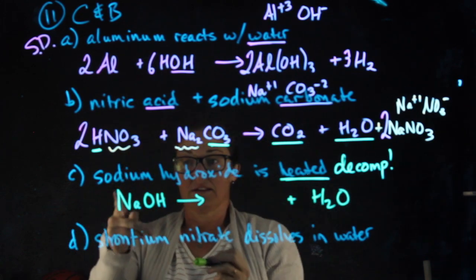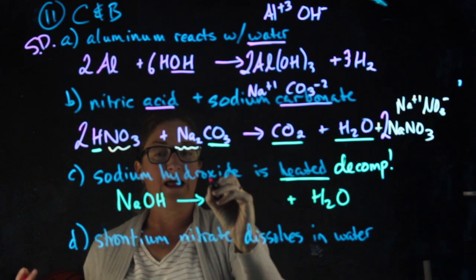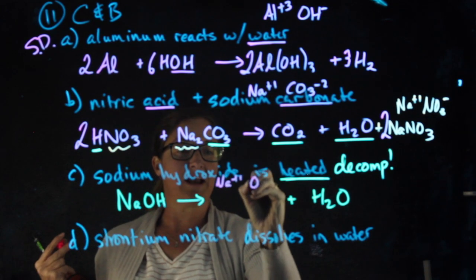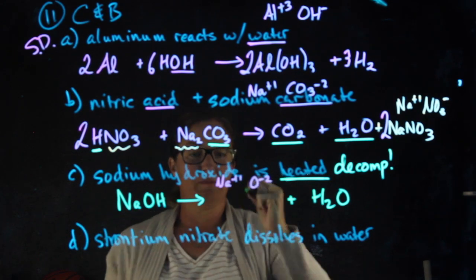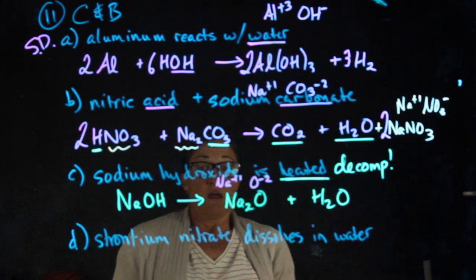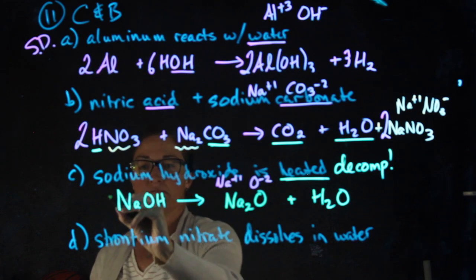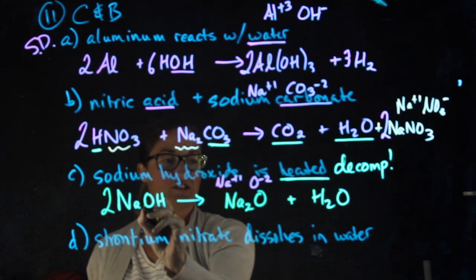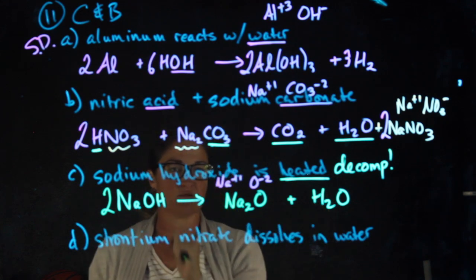Metal oxide. Sodium is my metal. So on the right, I'm going to have sodium, which is a plus one, combining with oxygen, which is a minus two. That product will be Na2O. This reaction is not yet balanced. Two sodiums on the right, I'll put a two here. Two oxygens, I have a total of two oxygens. Two hydrogens, I have two hydrogens. We're good.